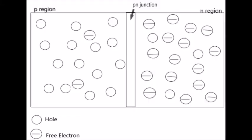The diode's terminals are attached to the N-type and P-type. The boundary between these two regions, called the P-N junction, is where the action of the diode takes place. When a sufficiently higher electrical potential is applied to the P-side than to the N-side, it allows electrons to flow through the depletion region from the N-side to the P-side. The junction does not allow the flow of electrons in the opposite direction when the potential is applied in reverse.